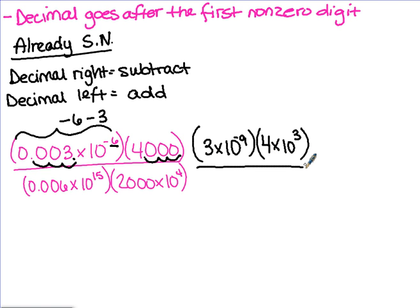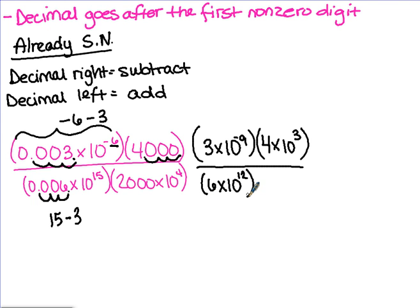We moved the decimal 3 places to the left, so we're adding 3 to the exponent. Our new expression is 4 times 10 to the 3rd, because 0 plus 3 is 3. Now let's look at the bottom numbers. To be in correct scientific notation, the decimal needs to go after the first non-zero digit — in this case, 6. From its original position it will have moved 1, 2, 3 places to the right, so we subtract 3 from the exponent 15. Our new exponent is 12, giving us 6 times 10 to the 12th.